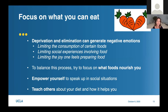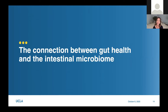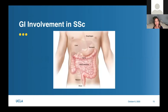Another important thing is to speak up in social situations. If you're uncomfortable telling someone at a restaurant that you can't eat onions, you really have to speak up because this is your health and your life. You want to make sure you're surrounded by people who support you in this journey, and it's valuable to teach the people around you about your diet and how it helps you - this can help empower you to take control of your health.